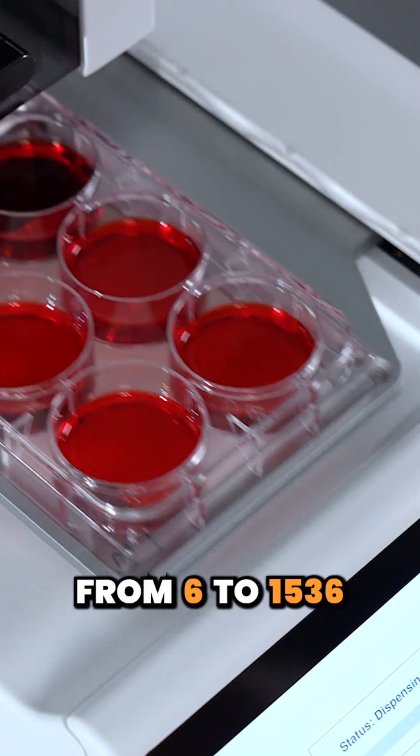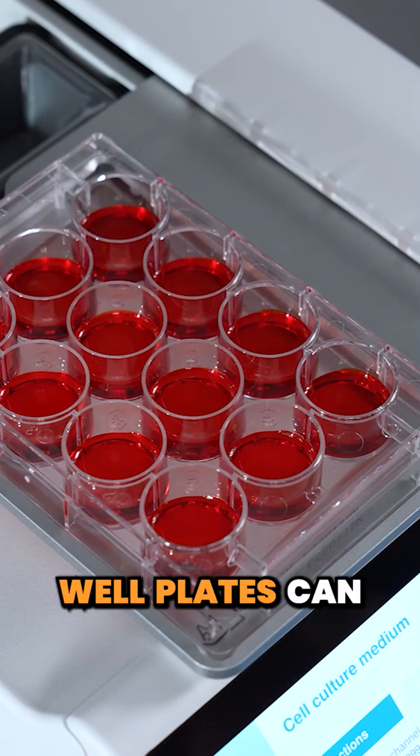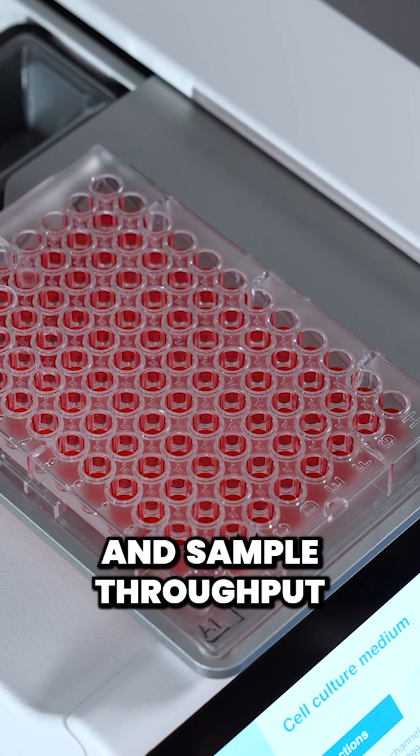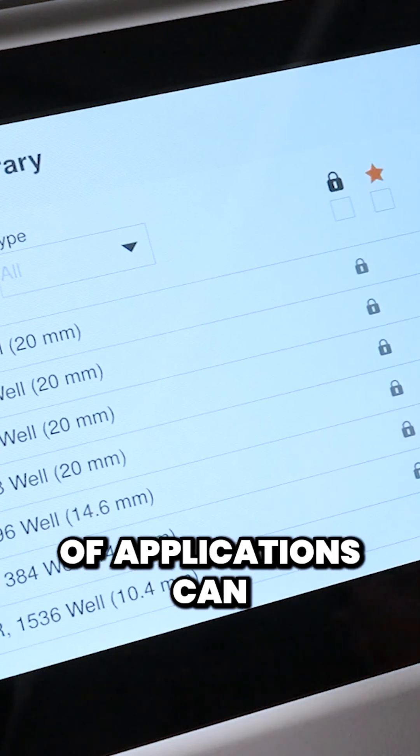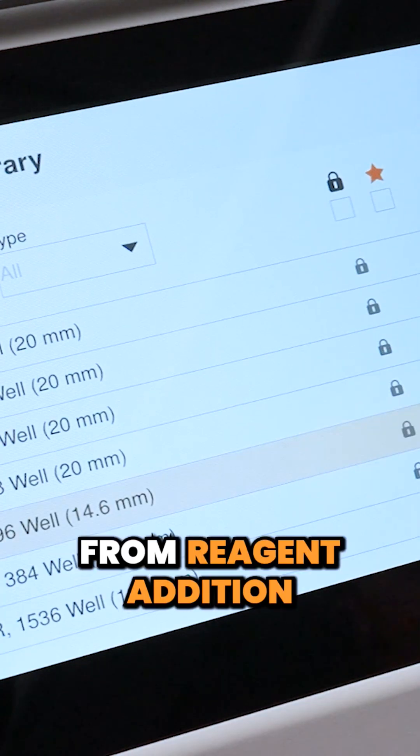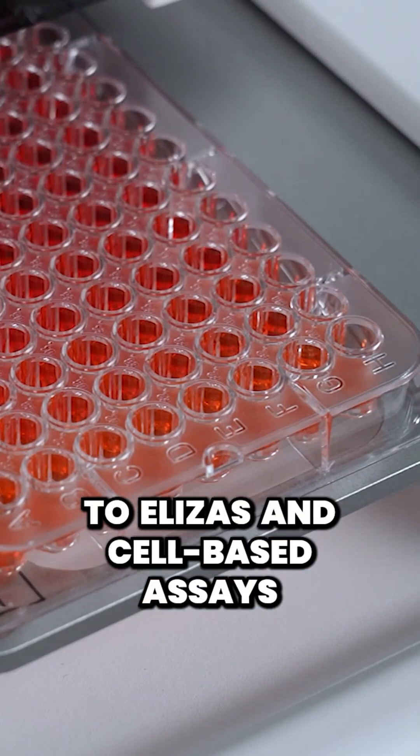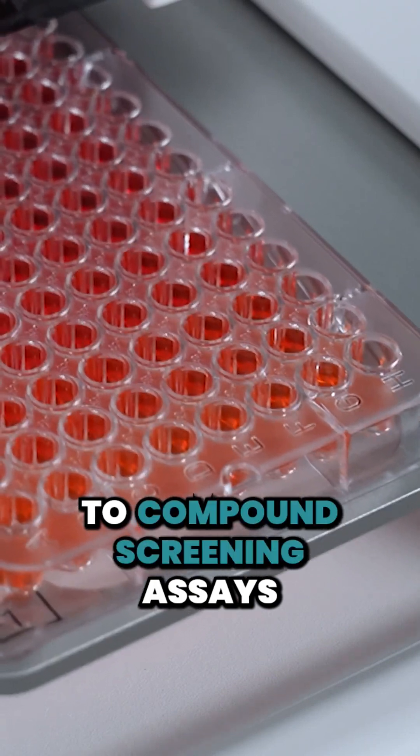Any plate format from 6 to 1536 well plates can be handled on both units, depending on your application and sample throughput. Just choose your plate type and a vast number of applications can be supported by the system, from reagent addition to ELISA and cell-based assays to compound screening assays.